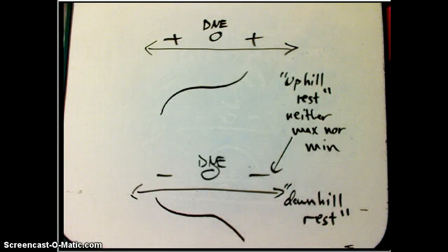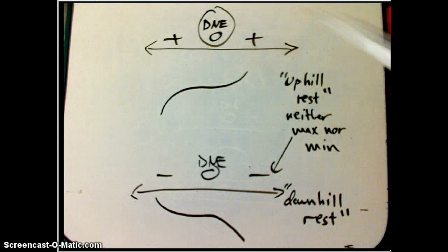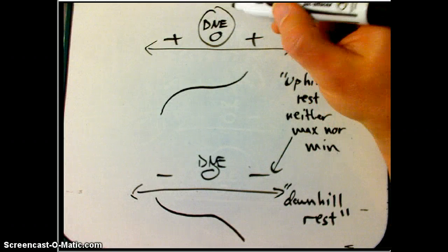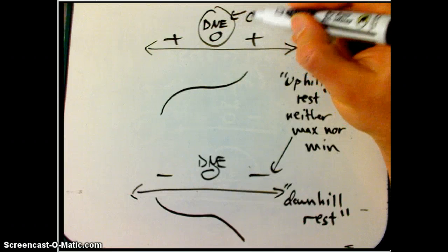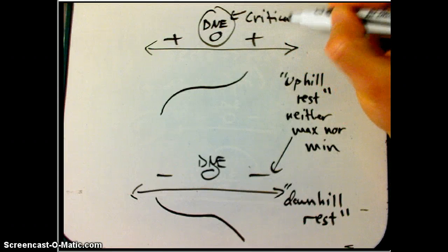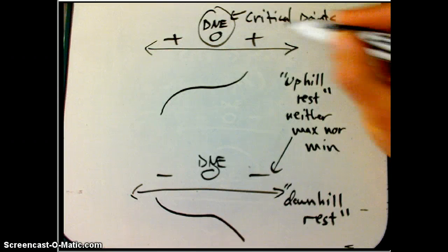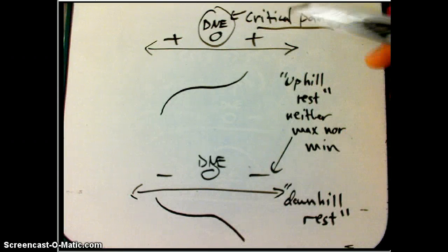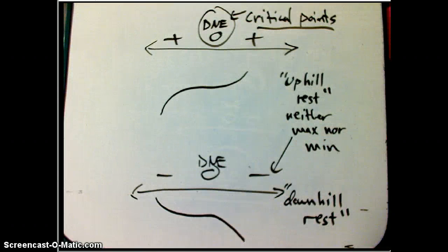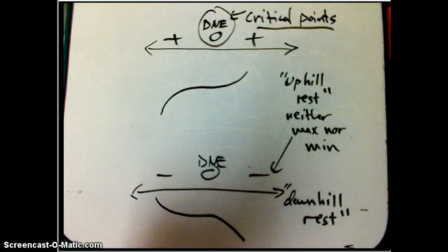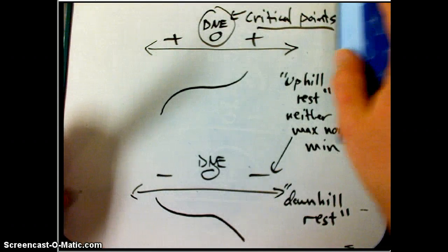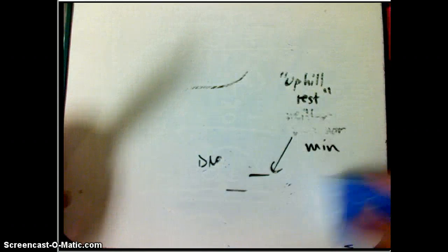That's all the possibilities for if you have a DNE or a zero. Those are the critical points. If it's a zero, it gets a special name, a stationary point, or critical numbers they're often called. That's all the possibilities of what can be on each side. Four possibilities. Two of them, one gives you a max, one gives you a min. Two of them give you neither.